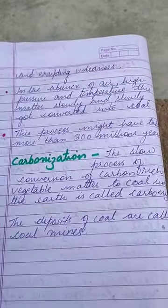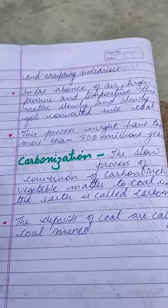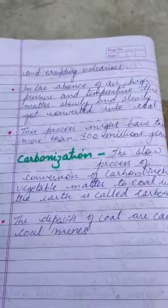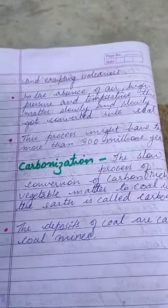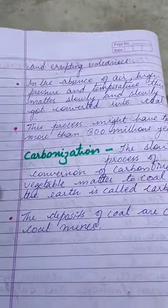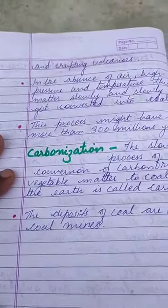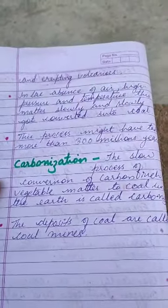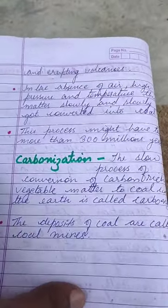The process of conversion of carbon-rich vegetable matter into coal under the earth is known as carbonization. The coal that is formed is found in coal mines.